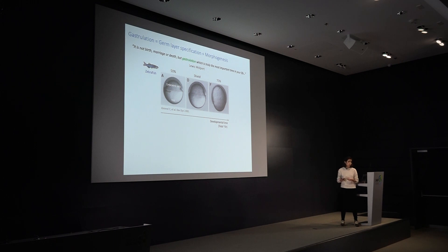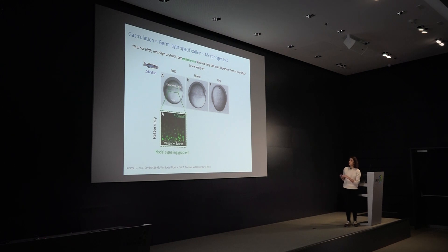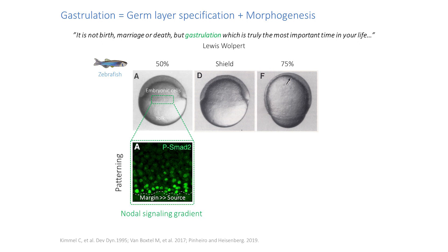At the start of gastrulation in zebrafish, at the interface between the embryonic cells and the yolk, a gradient of nodal signaling is formed. You can visualize this as a gradient of nuclear accumulation of Smad2, which is the downstream effector of nodal. Nodal is a member of the TGF-beta family and it signals via Smad complexes to activate transcription of key genes for the patterning of the different germ layers.